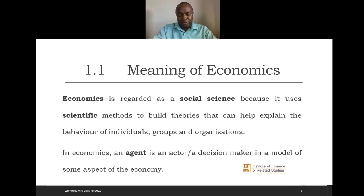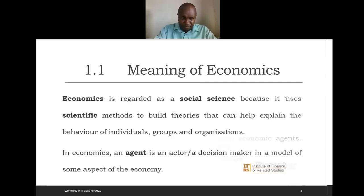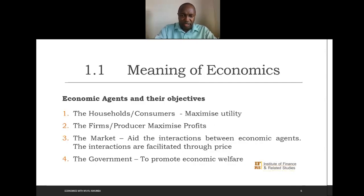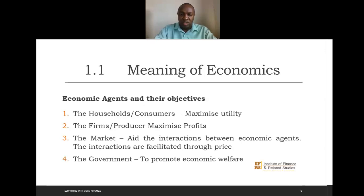In our definition we spoke of various economic agents. An economic agent is a decision maker, and in economics we have four critical decision makers. One of them are the consumers, and the objective of consumers when they are making their decisions is to maximize utility.